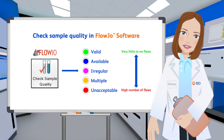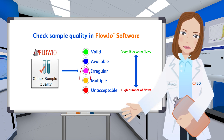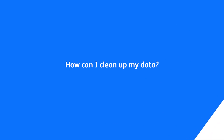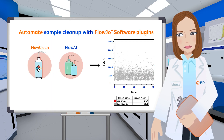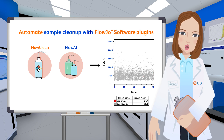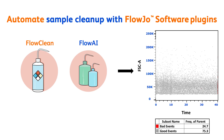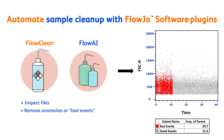You may want to consider cleaning up any samples with a magenta, yellow, or red badge. How can I clean up my data? Cleaning up your data can be automated in Flow Joe software through the plugins FlowClean and FlowAI. These quality control algorithms inspect files, remove anomalies or bad events, and provide you with a high-quality subpopulation of good events for subsequent gating.